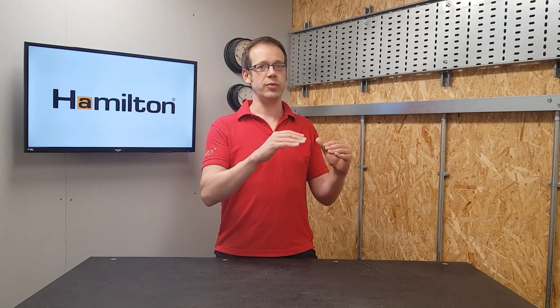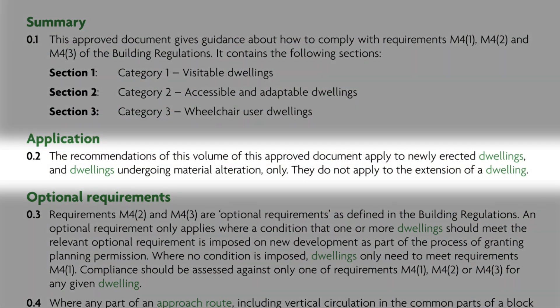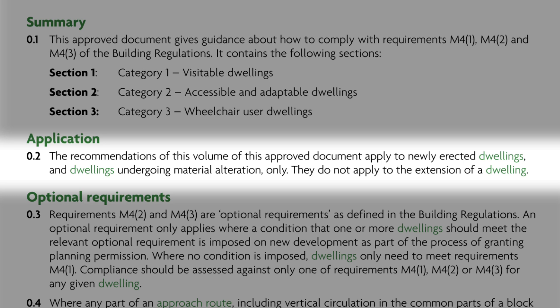But what about the situation where you're building an extension and the existing switches and sockets are not within these tolerances? Do you need to meet the requirements of Part M and potentially have the tricky situation of an old and a new switch close to each other at different heights? Turning to paragraph 0.2 in the approved document, we read that the recommendations apply to newly erected dwellings and dwellings undergoing material alteration only - they do not apply to the extension of a dwelling.